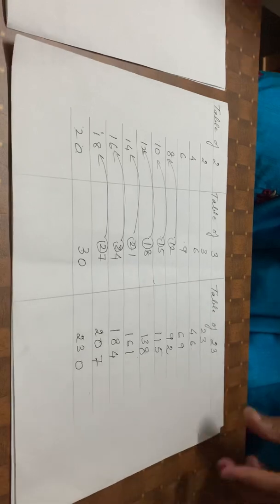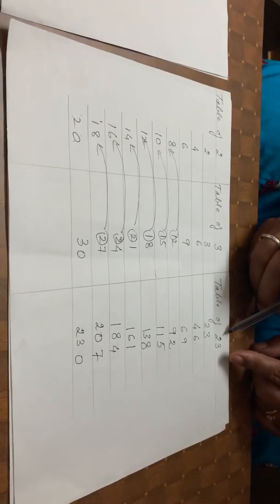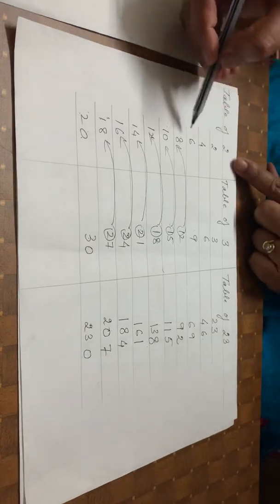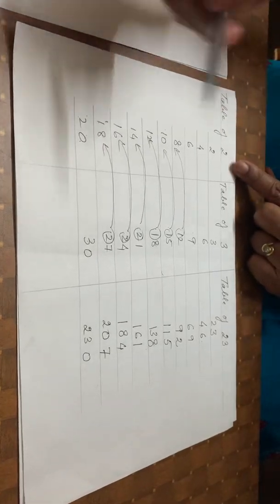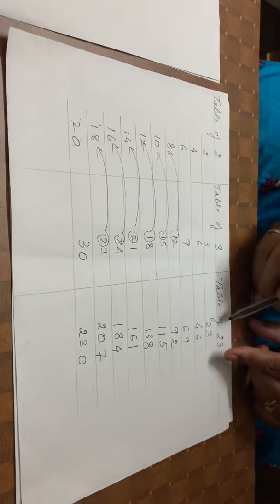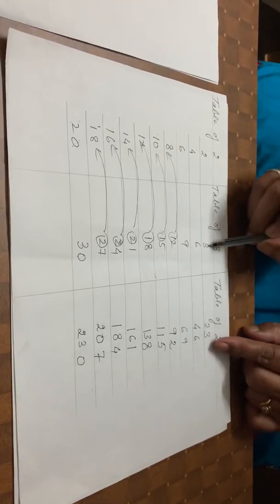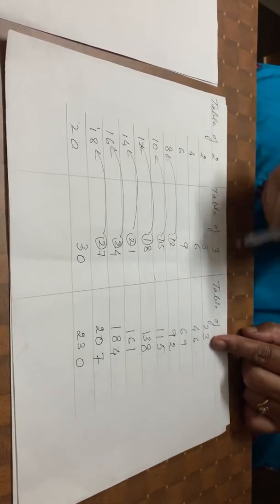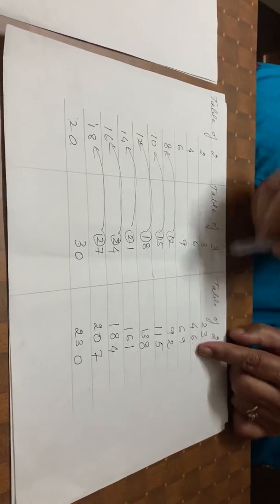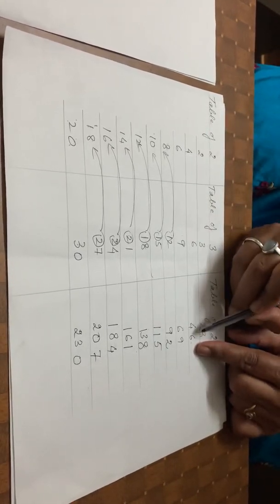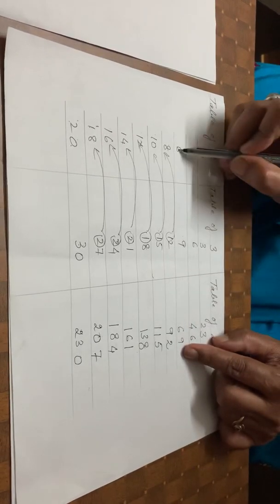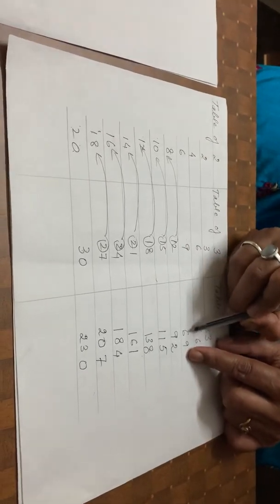Now let us take one more number, let us take 23 — digits 2 and 3. So we will first write the table of 2, next the table of 3, and now we will start writing the table of 23. First this 3 and then in front of that 2, so the number becomes 23. Then 6 and 4, so the number is 46. Then 9 and 6, so this number becomes 69.